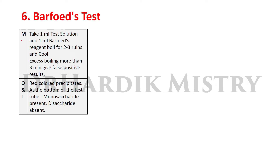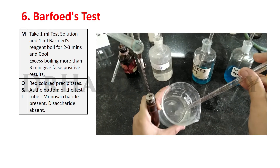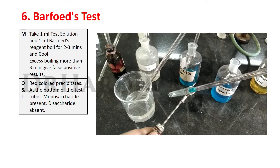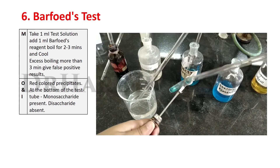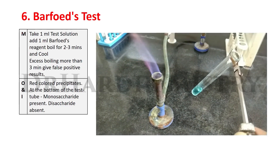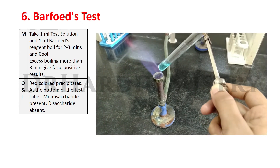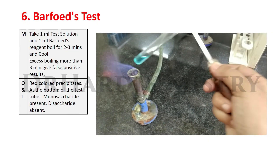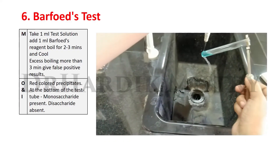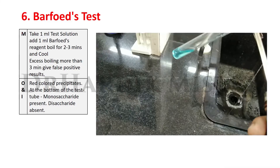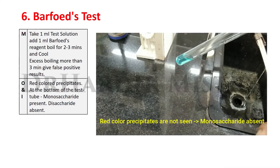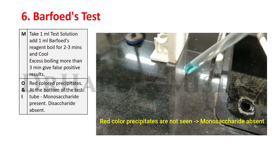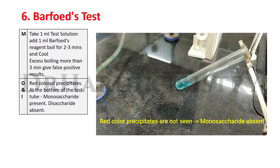Method, observation, and inference of Barfoed test. Method: Take 1 ml test solution. Add 1 ml Barfoed's reagent. Boil for 2 to 3 minutes and cool. Note: excess boiling more than 3 minutes gives false positive results. Observation: Red colored precipitates at the bottom of the test tube. Inference: Monosaccharide present; disaccharide absent. That is the Barfoed test.